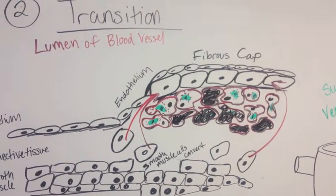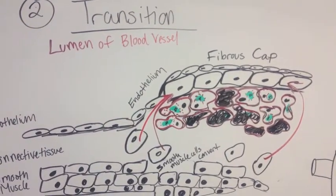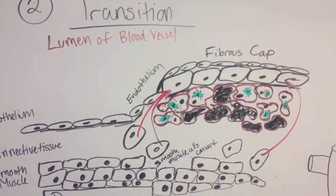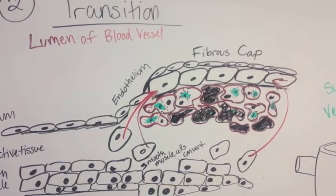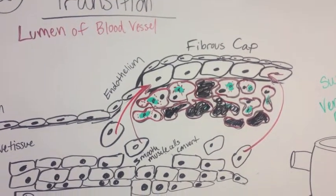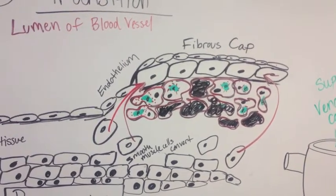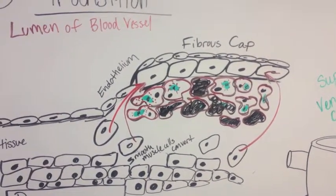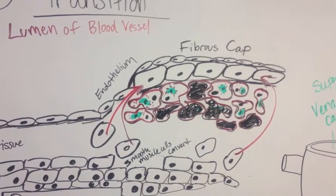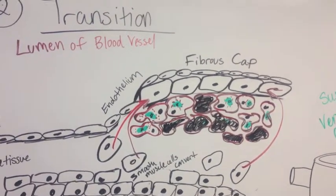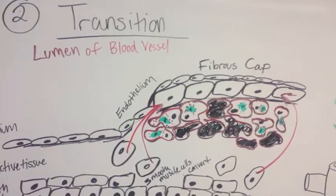The foam cells become necrotic and die and the smooth muscle cells of the blood vessel migrate to the endothelium to form a fibrous cap to contain the inflammation. This is the beginning of the formation of the necrotic core.